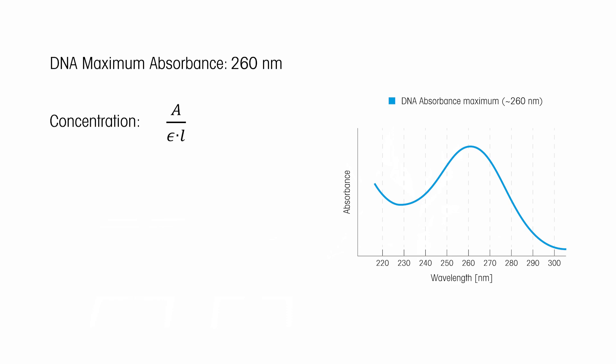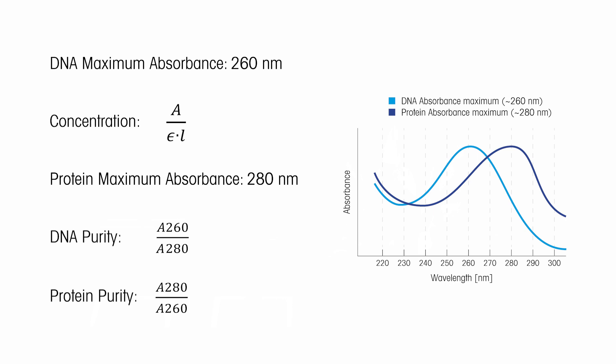Proteins, on the other hand, absorb at 280 nm and are considered as impurities in the context of DNA samples, and vice versa. The ratio of absorbances at 260 nm and 280 nm indicates the purity of the sample.